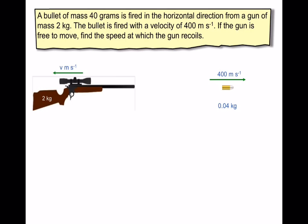And what we've got to find is the speed that the gun is going to recoil. We know that the speed of the bullet is 400 meters per second and its weight is 0.04 kilograms.